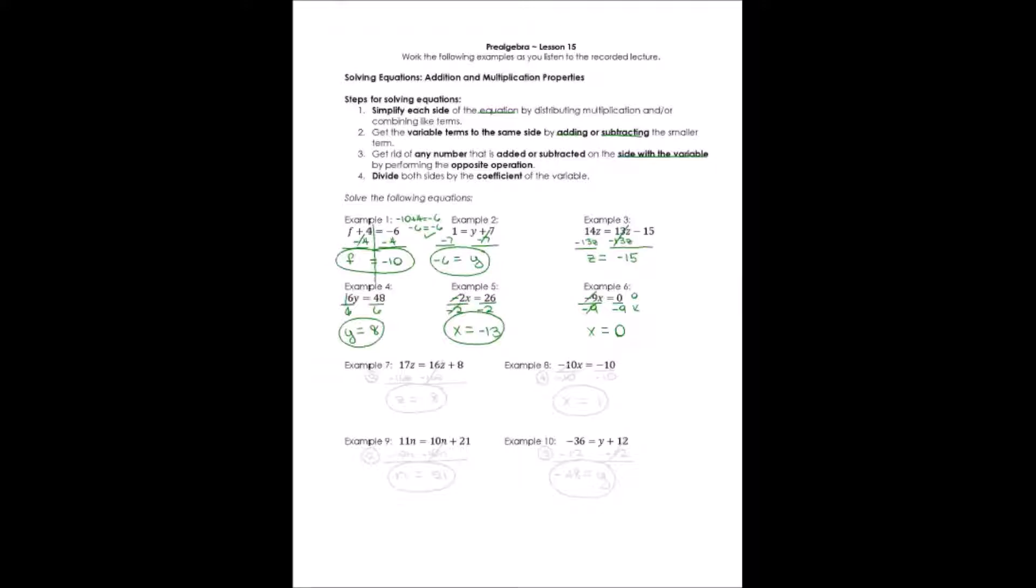Next, number seven. Let's see where we are in our solving equation steps. This one has variables on both sides. Well, that would be step number two is where we're going to begin. I'm just going to write it down and circle it. I'm starting at get the variable terms to the same side by adding or subtracting the smaller term. The smaller term is 16z. Since it's a positive 16z, I'm going to have to do the opposite, a negative 16z to both sides. Once I do this, I say 17z minus 16z is 1z or just a positive z. These cancel and all I have left over here is a positive 8. The answer, z is equal to 8.